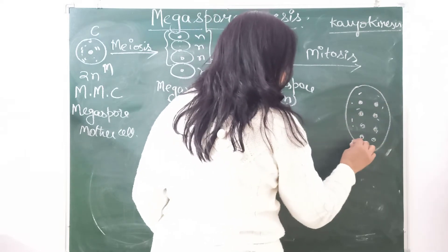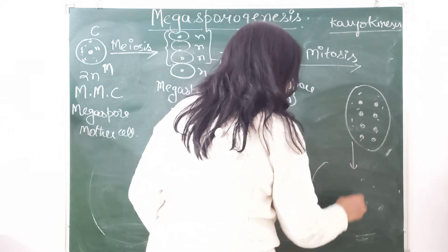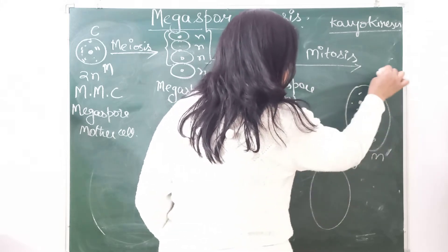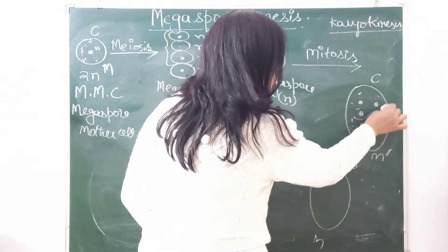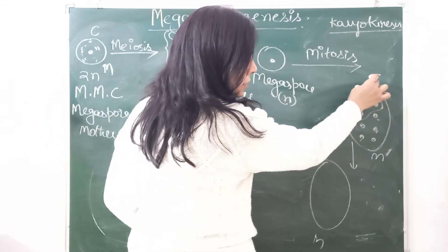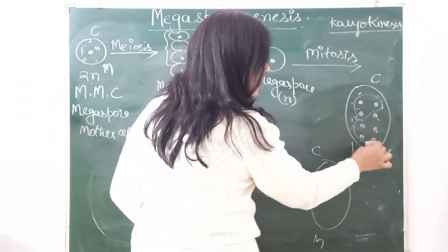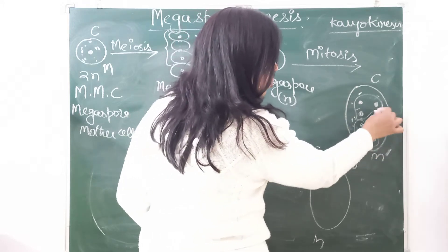After some time, these nuclei get arranged. This was micropylar and this was chalazal end. Three nuclei will move towards chalazal end and three nuclei will move towards micropylar end, and these two nuclei will remain in the center.